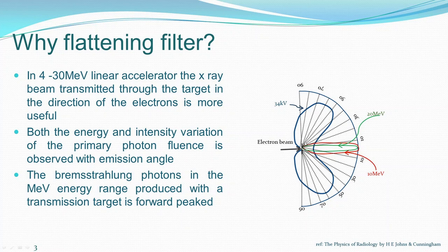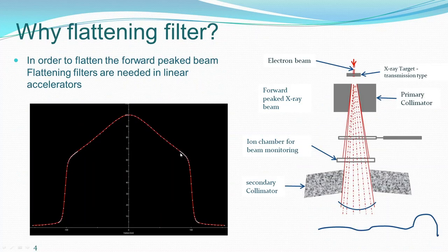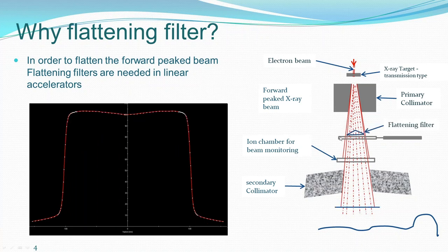When an electron beam of high energy impinges on a transmission target, most of the X-rays — the Bremsstrahlung produced — go in the forward direction. But for low energy photons, it goes at a particular lateral angle. So the final composite profile is something like what we get now for Triple F beams. The idea in those days was to give a uniform dose distribution, so they introduced a flattening filter between the target and the chamber.